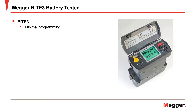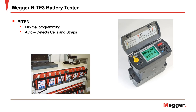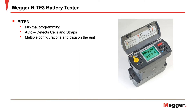The MegaByte 3 requires minimal programming. Simply enter the name of the site and the name of the string — no other information is required. The Byte 3 auto-detects whether it's on a cell or a strap, so there is no need to program the string configuration. The Byte 3 can record and maintain multiple string data with its 32 meg of memory.